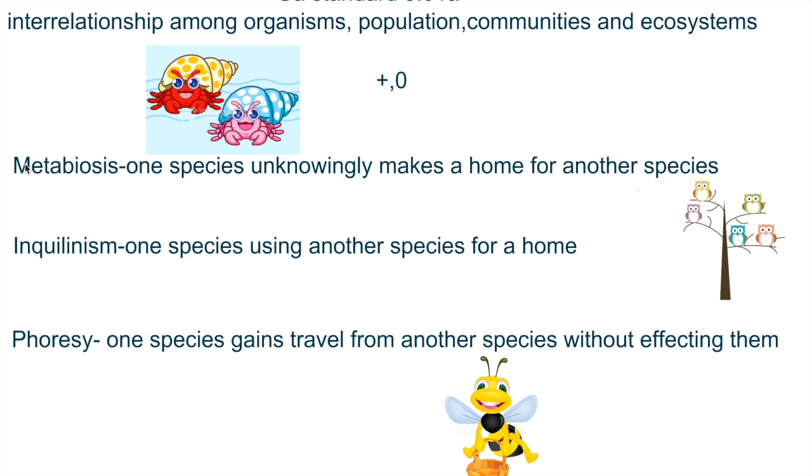The second was inquilinism. One species using another species for a home. Again, example of that was the tree and the owl. The third was phoresy. One species gains travel from another species without affecting them. The sperm whale and the barnacles.